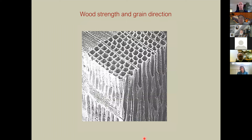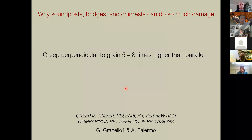Wood strength depends strongly on grain direction. A useful analogy is a handful of squarish straws — it's quite strong when compressed or stretched along the length, but much weaker sideways, where you're flattening them. Creep perpendicular to the grain is actually five to eight times higher than parallel to the grain. This is why sound posts, bridges, and chin rest clamps do so much damage — those components stress the wood in the most creep-susceptible direction.